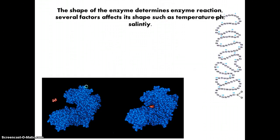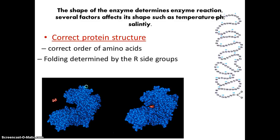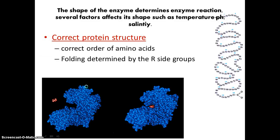So as you see, the shape of the enzyme determines enzyme reaction. And there are several factors that affect shape, such as temperature, pH, or salinity, which means amount of salt. And that maintains that correct protein structure.